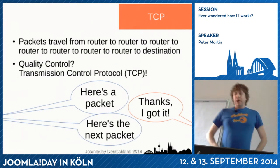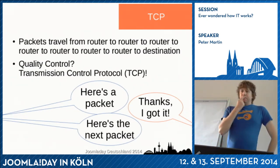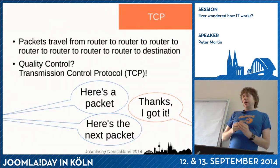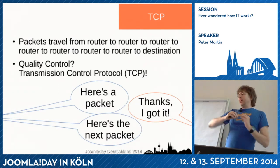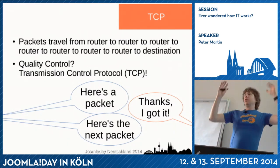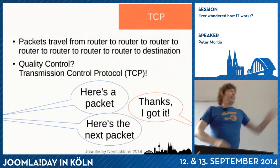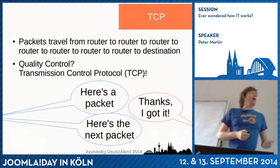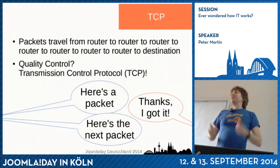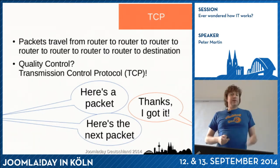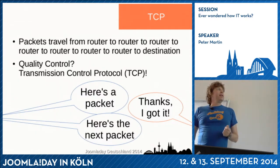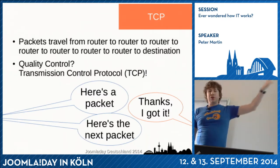TCP is the other part — it's the quality control of the internet. Every packet is sent to a destination, and the destination will acknowledge: 'yes, thank you, I got packet number five.' Then it will send packet number six. If at some point it didn't get acknowledgement in time, it will just resend the packet. This is a simplified version, but that's how it works.